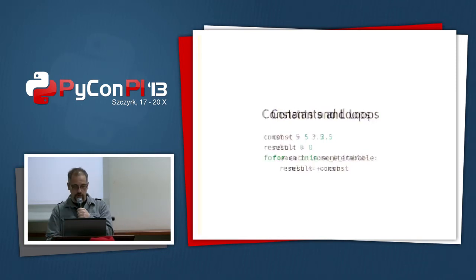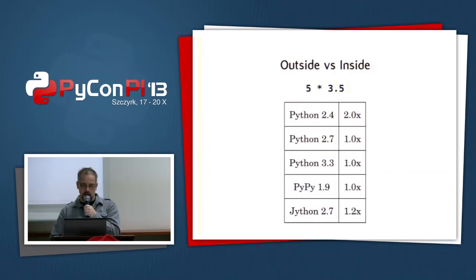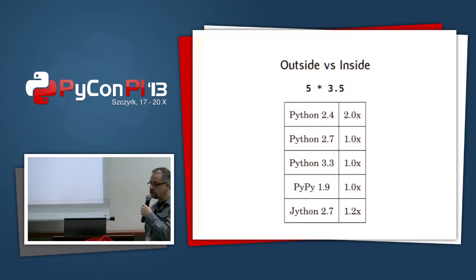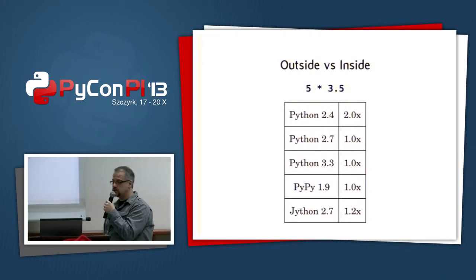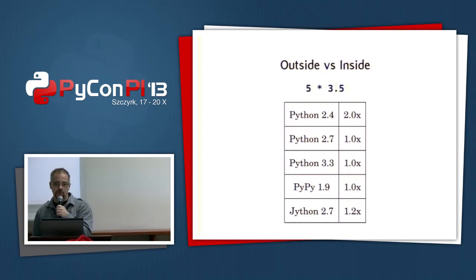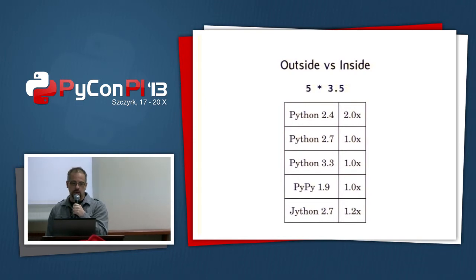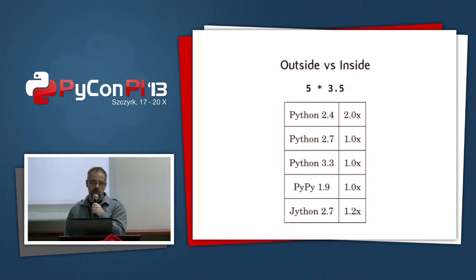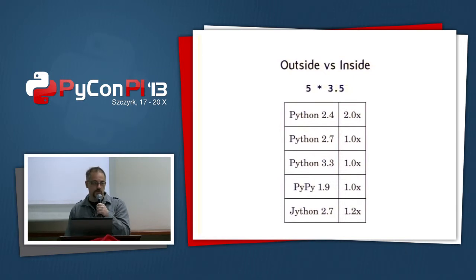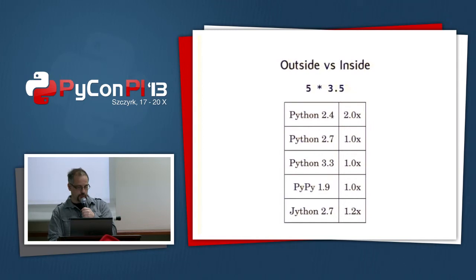In Python 2.4, having the constant calculation inside the loop will slow the loop down. In Python 2.7, it will not. In Jython it will still slow it down a little. PyPy is very fast — 30 to 40 times faster than Python 2.7 — because it will realize it can optimize away pretty much all of it.